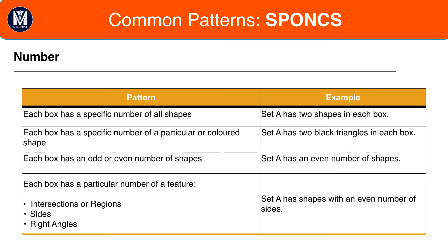Number patterns are to do with the number of shapes in each box. They could be to do with a specific number — Set A could have two shapes and Set B three shapes. They could be to do with odd or even — Set A could have an odd number of triangles. Alternatively, they could be to do with relative number — Set A could have more triangles than circles, whereas Set B could have more circles than triangles. Number, whether specific, odd/even, or relative, can be combined with a feature such as the number of shapes, intersections, regions, sides, or right angles.